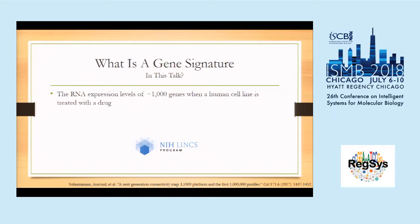So what do I mean by gene signature matching, and what is a gene signature? In this talk, when I say gene signature, I mean the RNA expression level of about 1,000 genes when a human cell line is exposed to a drug. This is the signature used in the NIH LINCS signature library. There are other ways of defining gene signatures, but this is the definition we'll keep to for today.